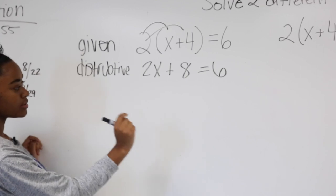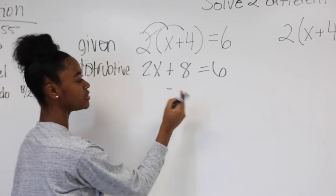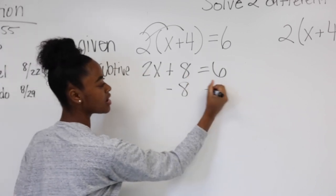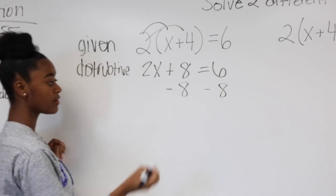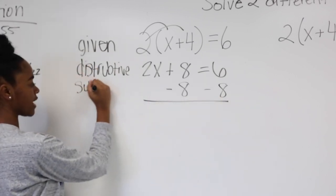Next, you want the x by itself. So you're going to subtract 8 from both sides. That's your subtraction property.